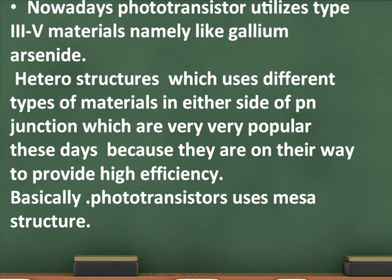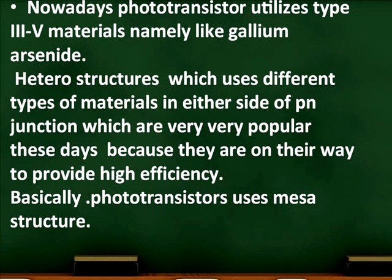Nowadays photo transistors utilize type III-V materials, namely gallium arsenide, and heterostructures which use different types of materials on either side of the PN junction. These are very popular these days because they provide high efficiency. Basically, the photo transistor uses a mesa structure.